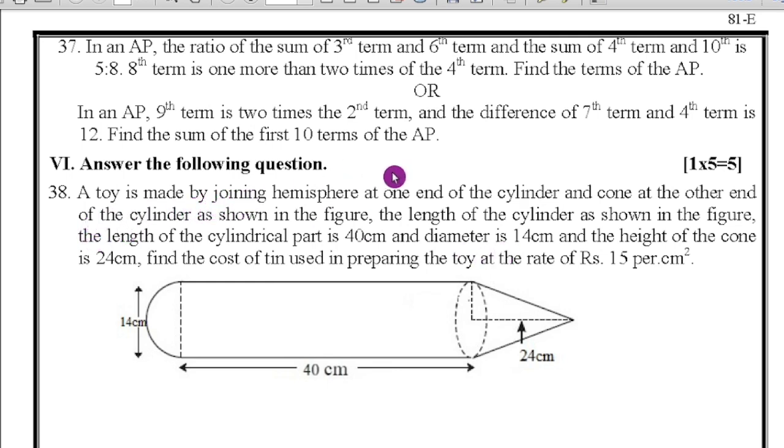Next last main, five marks. A toy is made by joining hemisphere at one end of the cylinder and cone at the other end of the cylinder as shown in the figure. The length of the cylindrical part is 40 cm and diameter is 14 cm and the height of the cone is 24 cm. Find the cost of the tin used in preparing the toy at the rate of Rs. 15 per square centimeter. This question's answer I have given, practice it, it's easy. This is the question, in this way this question is there. Practice it. Thank you for watching this video.